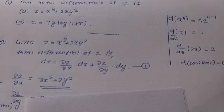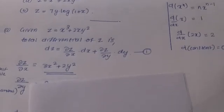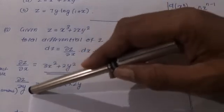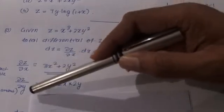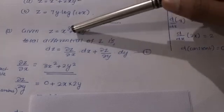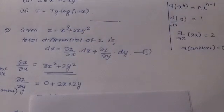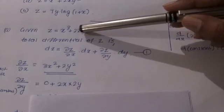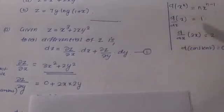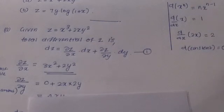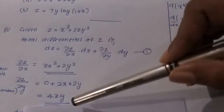Next, ∂z/∂y: here y is the variable and x is constant. The term x³ is constant, so its derivative is 0. For 2x·y², x is constant and we find the derivative of y², which gives 2y, so the result is 4xy.